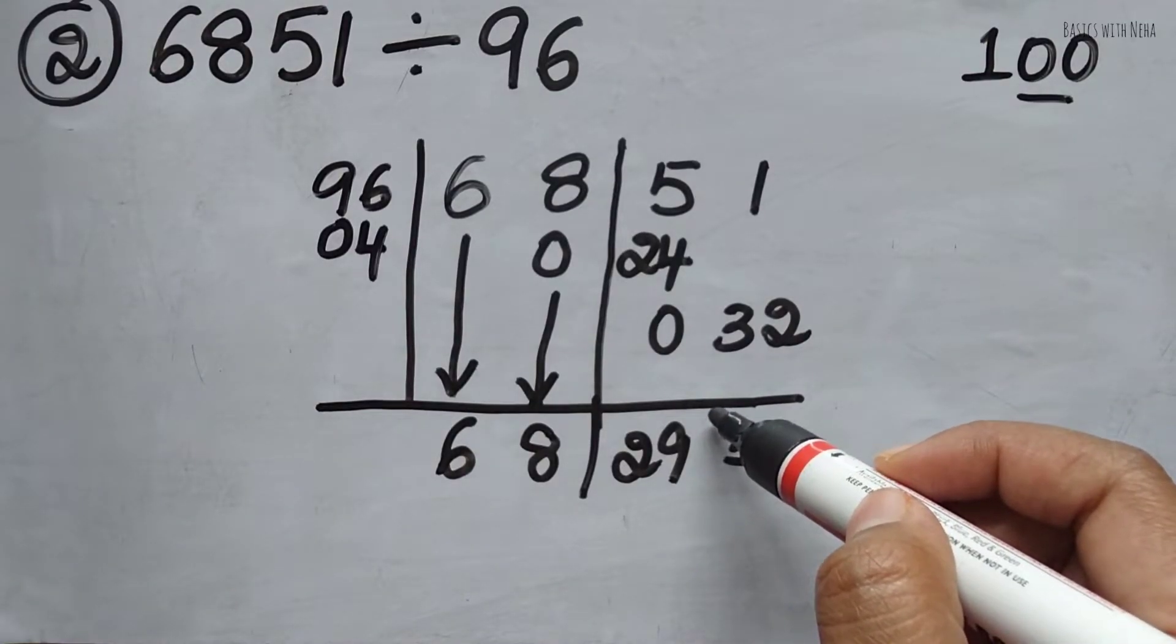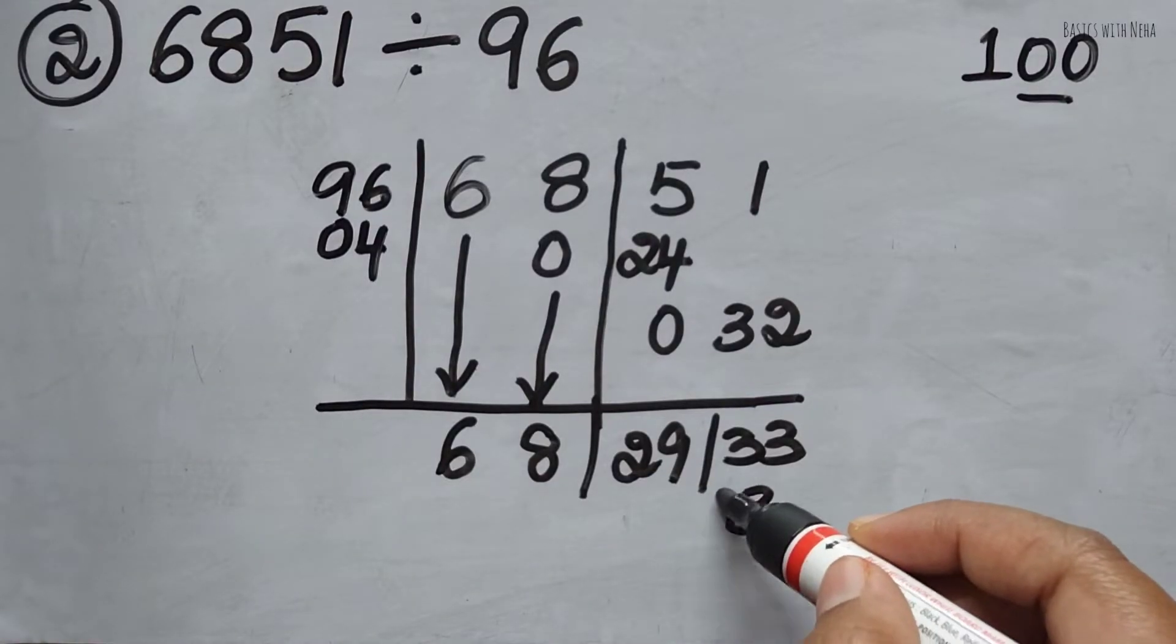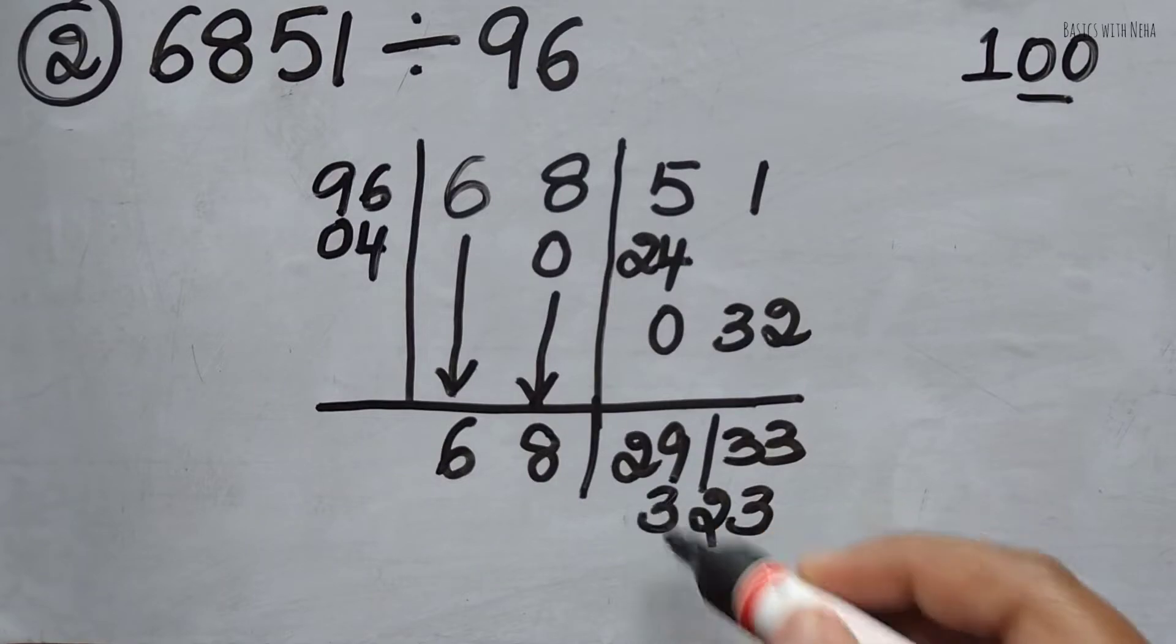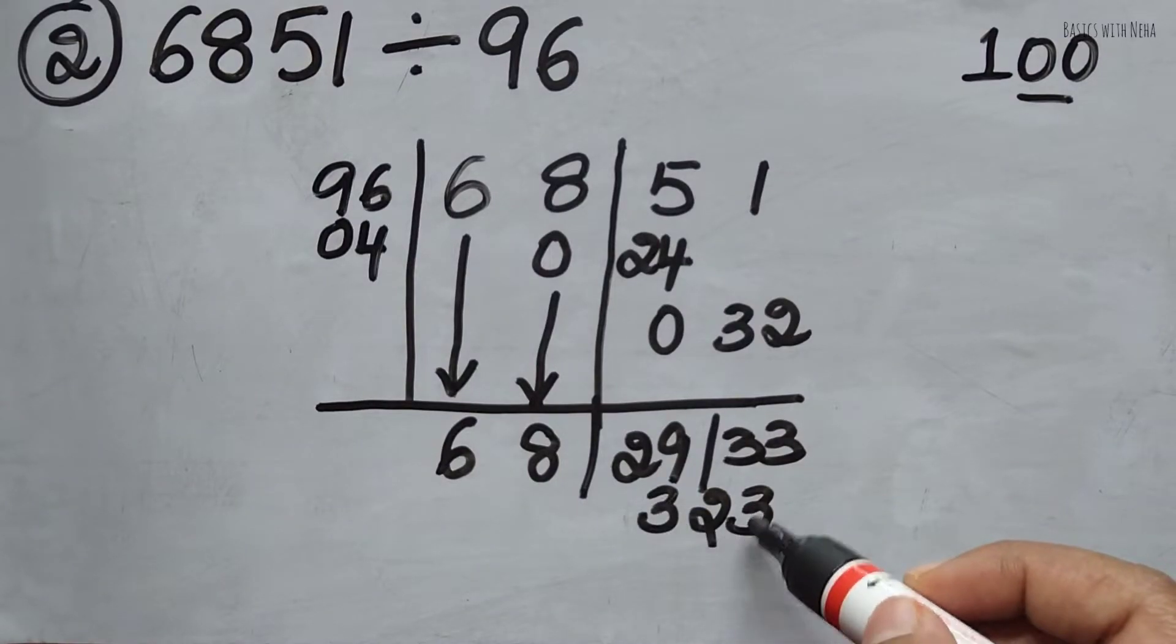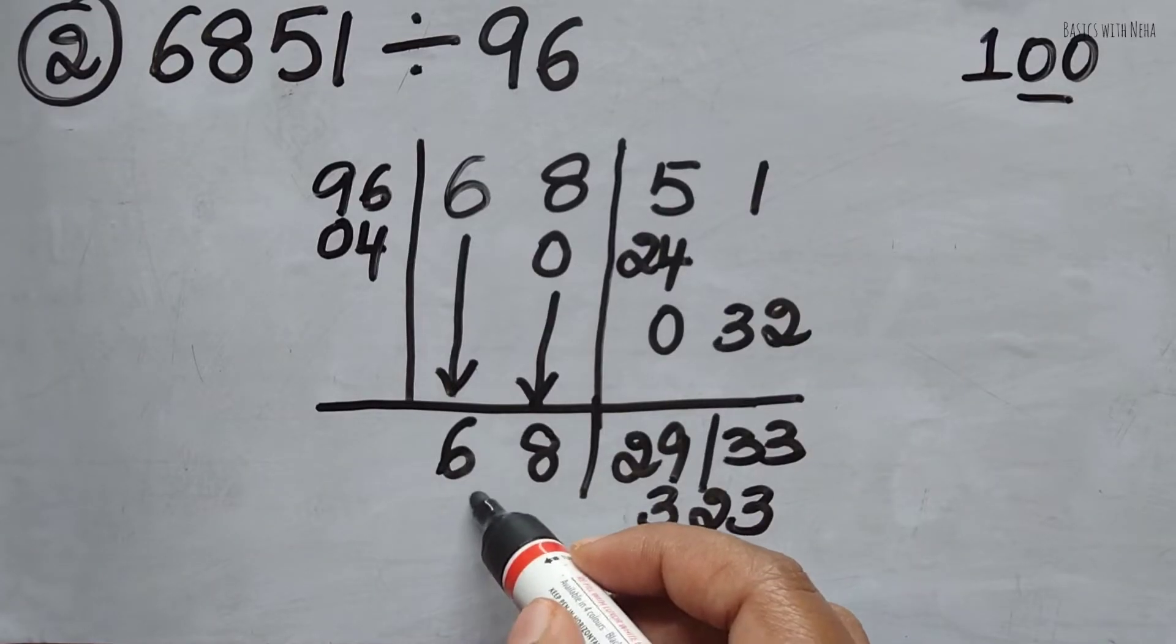Here I'm going to balance this first. So it will be 3, 12, 3. So it is 3, 2, 3, which is much more than 96. And here I have quotient as 68.